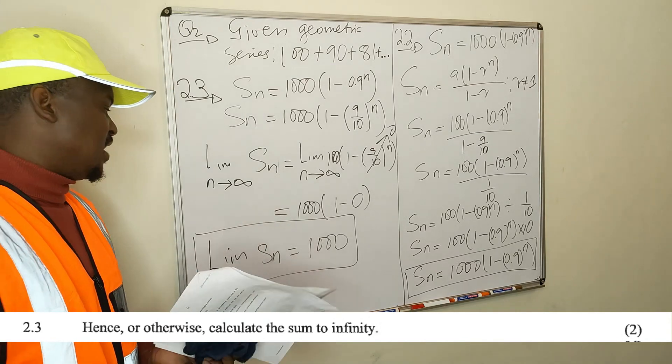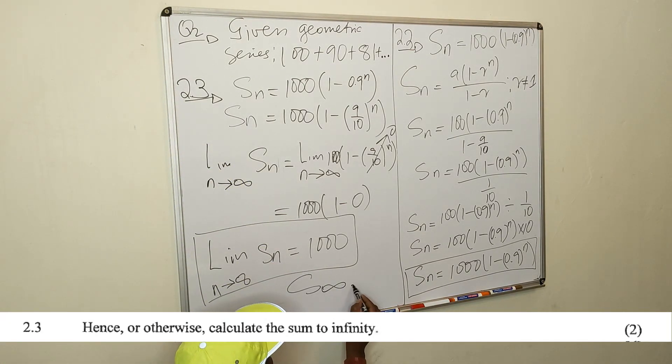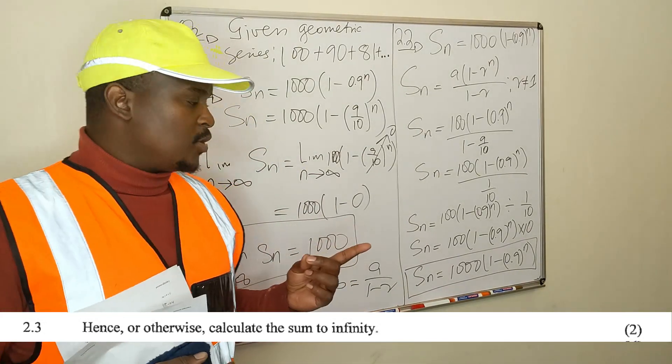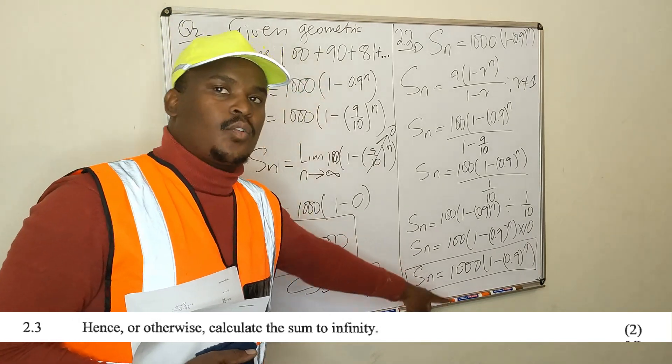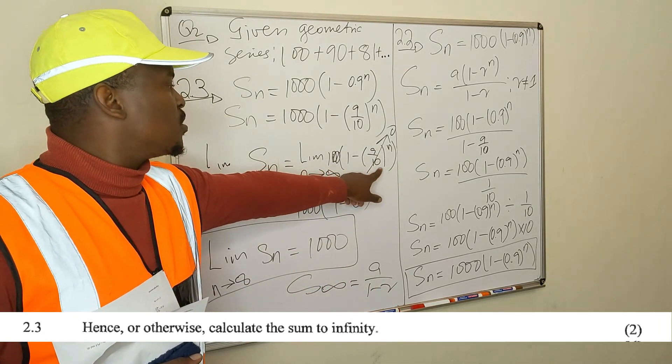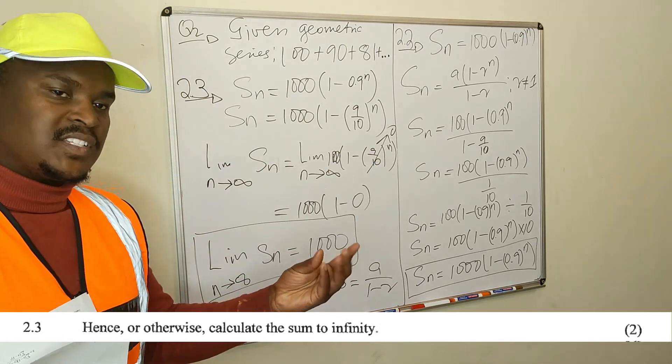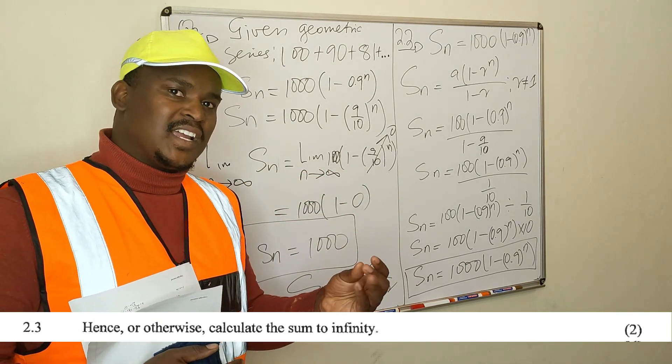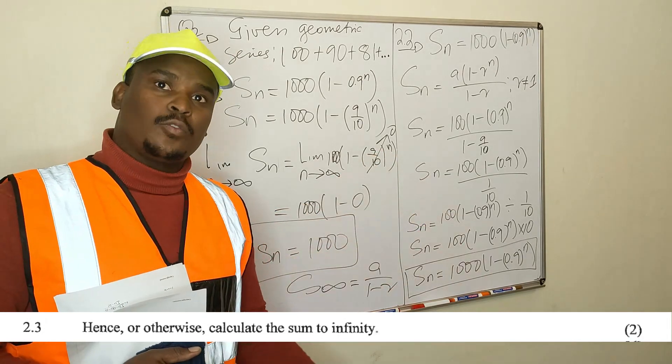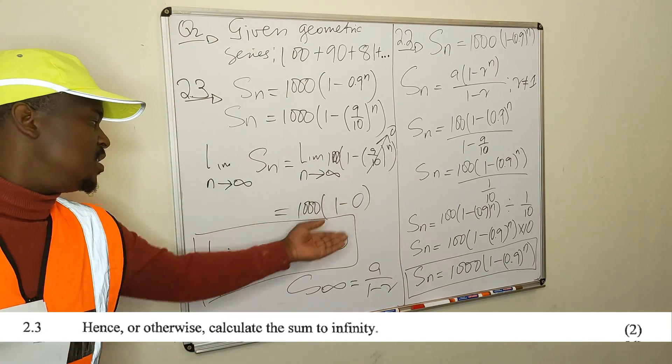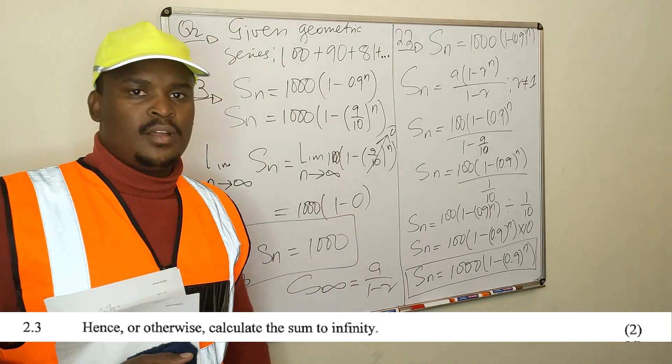It should be the same as that you get when you use the formula S to infinity is equal to A over 1 minus r. But I just wanted to explain what the limit means. It means that if you want the sum to infinity, we just take the limit as n goes to infinity and observe how it behaves. So this will go to 0, because the denominator will be growing at a faster rate, it will be increasing at a faster rate than the numerator. So the numerator will be outpaced, and therefore this will become very close to 0. And therefore our limit will be equal to 1000.